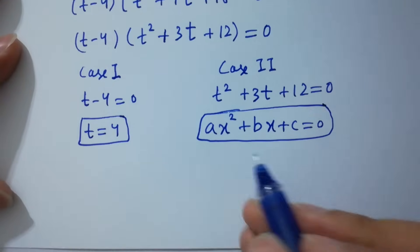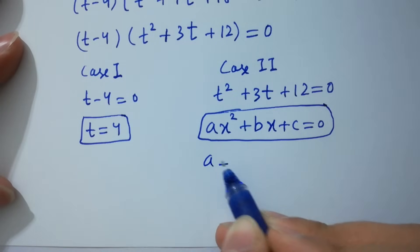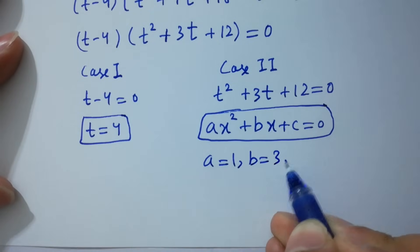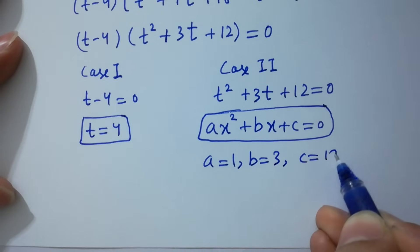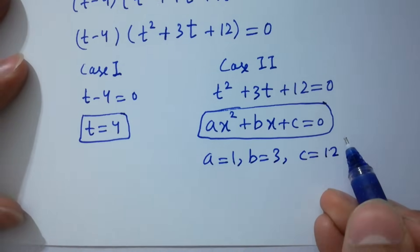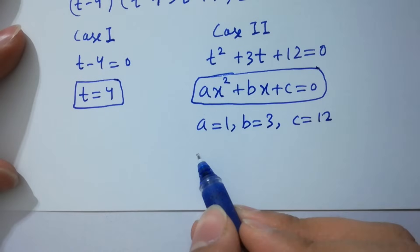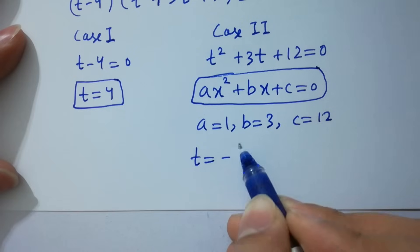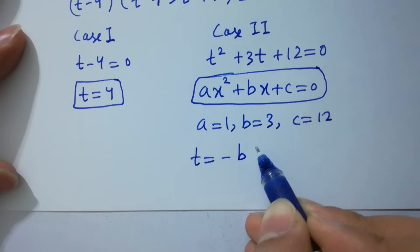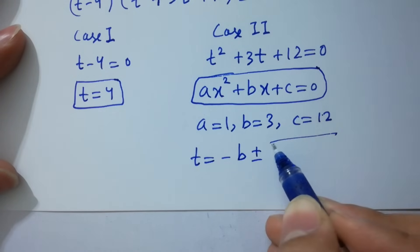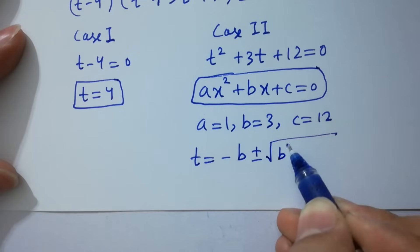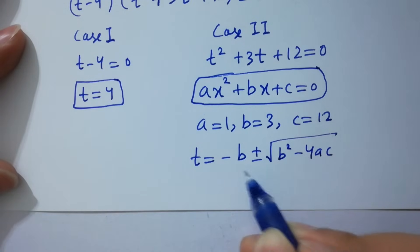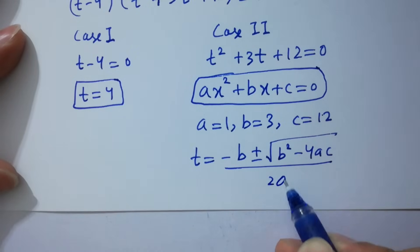By comparing, a equals 1, b equals 3, c equals 12. Applying the quadratic formula: t equals minus b plus or minus square root of b squared minus 4ac, all over 2a.